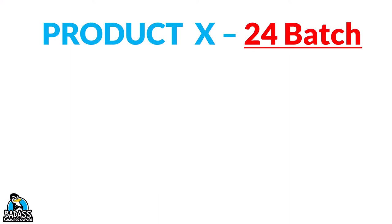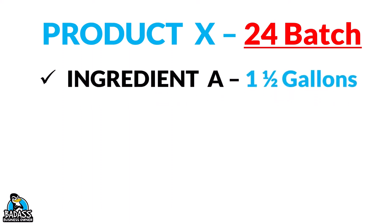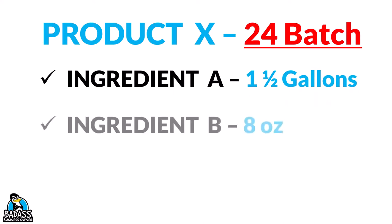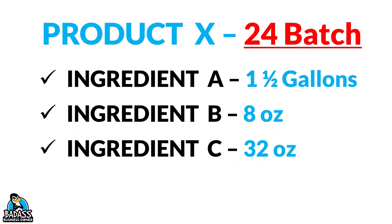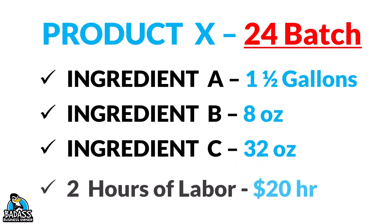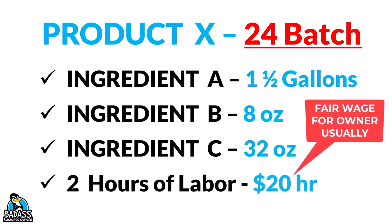In today's example, we're going to be making a product that comes in a batch of 24. So when you make it and put it together, you make 24 units. What goes into this? Well, there's Ingredient A, which uses one and a half gallons. Ingredient B uses eight ounces. Ingredient C uses 32 ounces. And because somebody needs to put it all together, there's two hours of labor at $20 an hour.